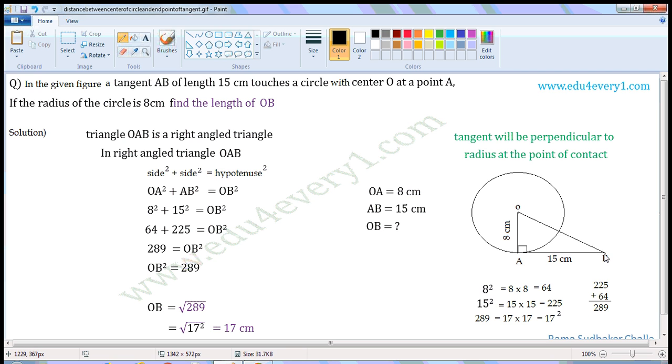AB is the tangent to the circle, and OA is the radius. AB is the tangent and OA is the radius, with A as the point of contact. So angle A will be equal to 90 degrees. That is, the tangent will be perpendicular to the radius at the point of contact.